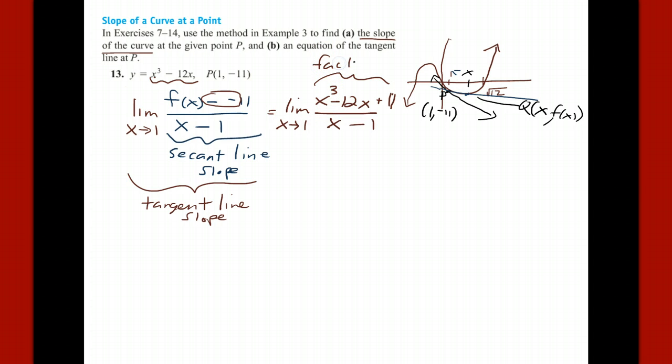Factoring cubics is usually a difficult task, but we can factor that, knowing that 1 is a root. We can long divide if you want. There's a shortcut called synthetic division. And so what we can do is take these coefficients: 1, there are no x squares, negative 12 and 11.